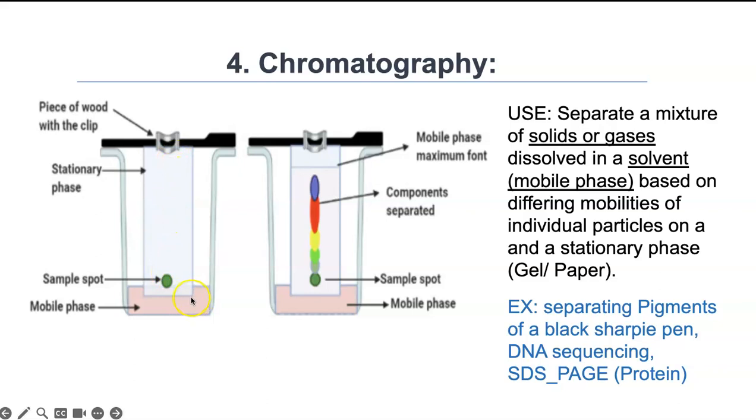The filter paper will wick the mobile phase and it will start traveling. As it travels, the components in this pig dye or pigment will separate into different colors. They all have different speeds at which they dissolve in this mobile phase. The one that is most soluble—that likes this solvent the most—will travel fastest because it will move much quicker. This would be the least soluble thing; it's moving the slowest. Does that make sense?